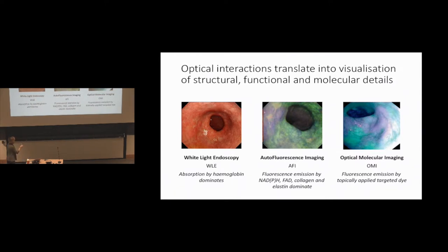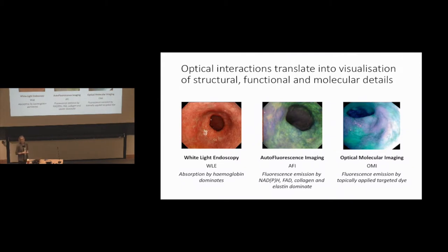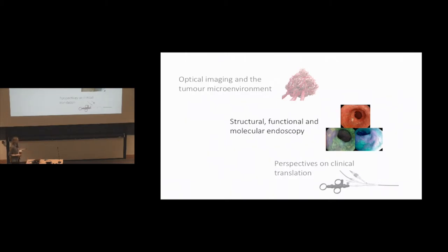At the moment, white light imaging is used routinely in the clinic because it essentially just replicates our eyes — it's easy and all optical imaging scopes will do it. Some optical imaging scopes also do autofluorescence imaging, but it has relatively poor specificity, and it's often used in conjunction with white light endoscopy, but many clinicians won't use it even if it's available. Finally, optical molecular imaging isn't used at all in the routine clinical sense, but it's under a very active area of research. For the major part of the talk, I'll go into more detail on each of these three approaches.